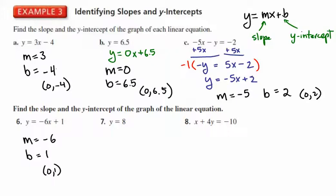Next example, y equals 8. This is a line where all points have a y-coordinate of 8, making it horizontal. The slope of a horizontal line is always 0. Its y-intercept is 8, or it passes through the point (0, 8).